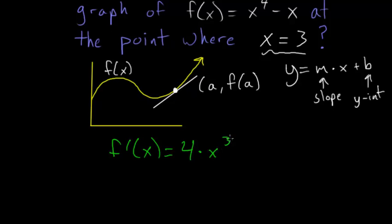and then for -x this is really x to the first so we'll bring the 1 down in front so the -1 times x to the 1 - 1, we'll decrease the exponent by 1 and make it 0 and x^0 is just 1 so this will be 1 times 1